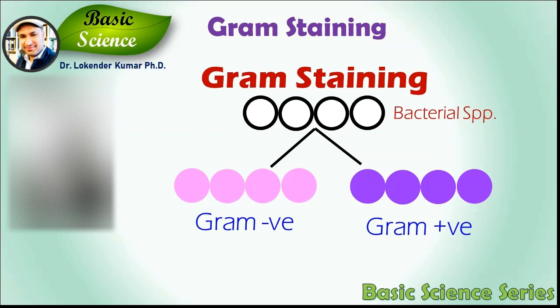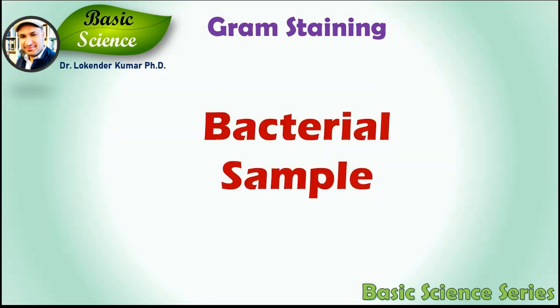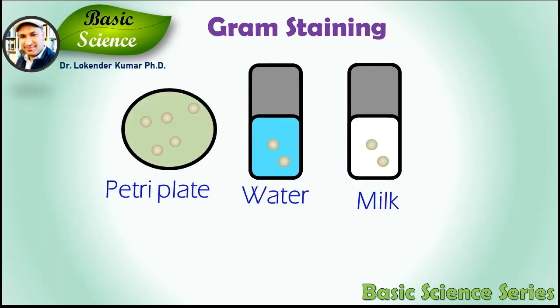Let me explain this technique with a very simple example. Suppose you have a petri plate with bacteria in it, or a sample of water or milk that you want to test for the presence of bacteria, and you want to know what kind of bacteria is present in your sample — means either gram positive or gram negative.